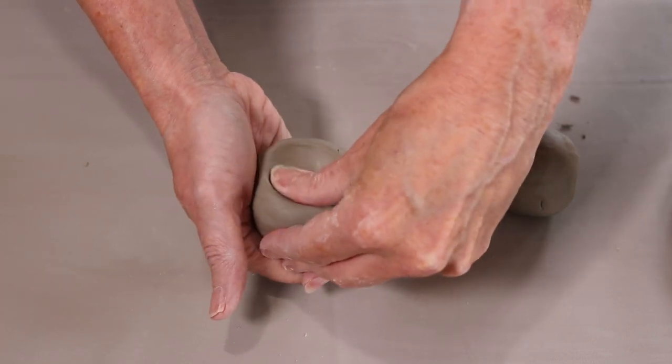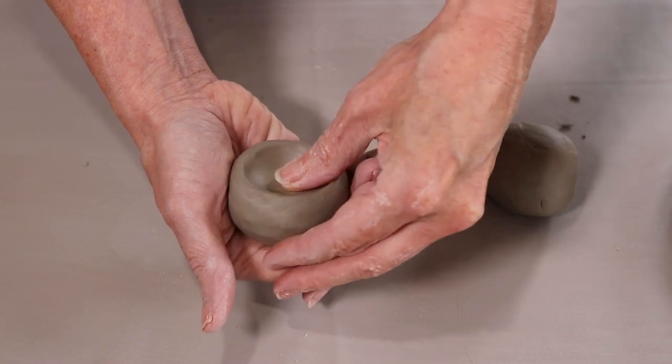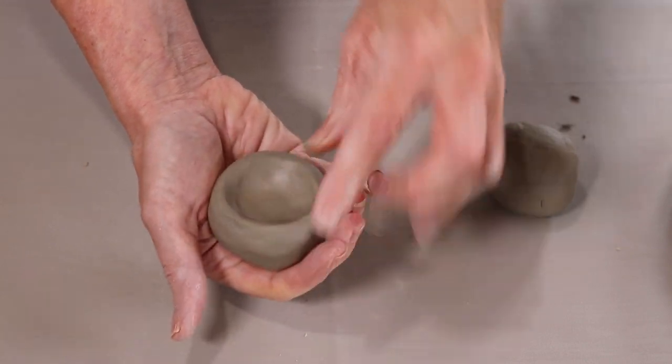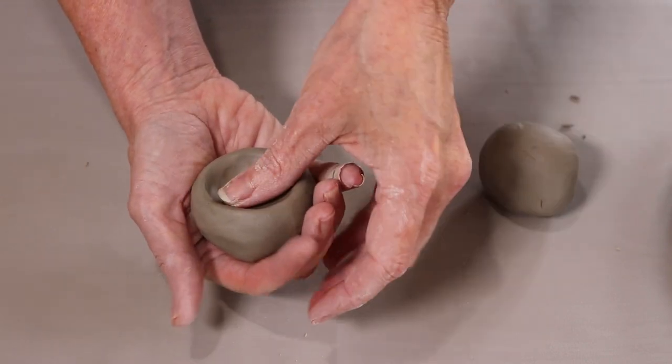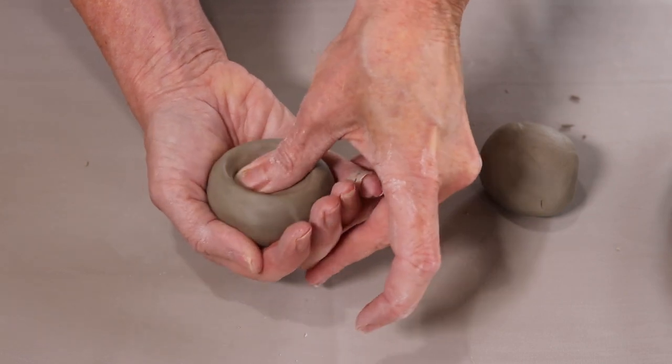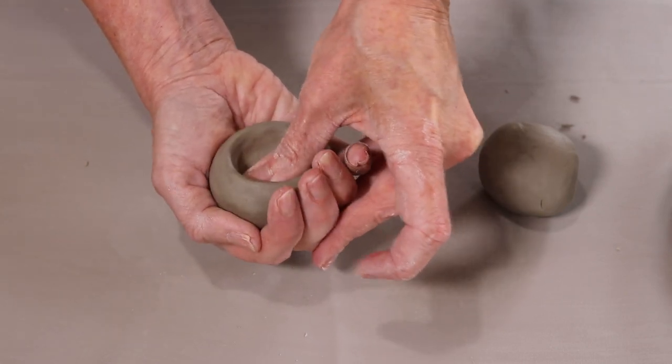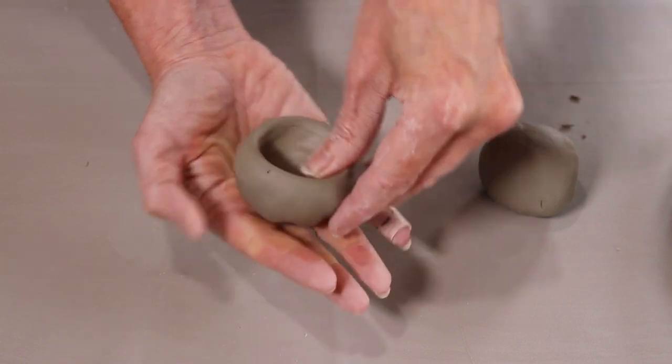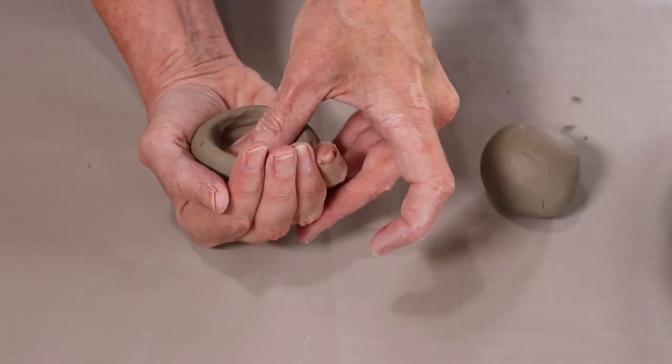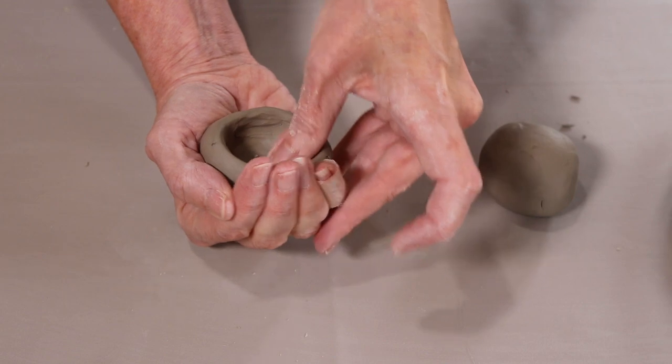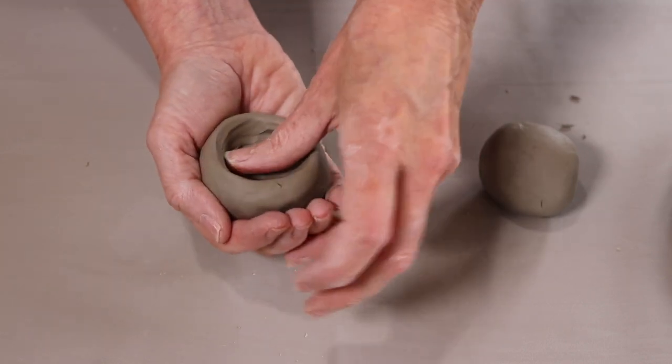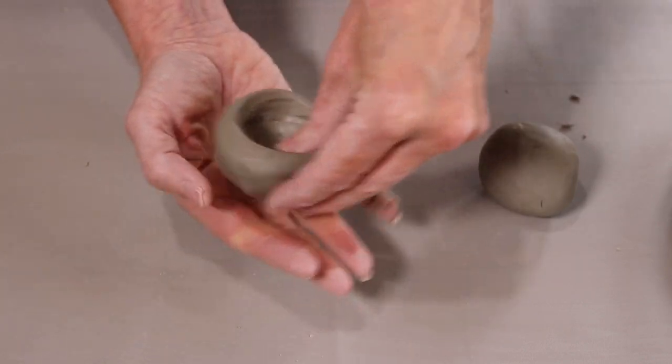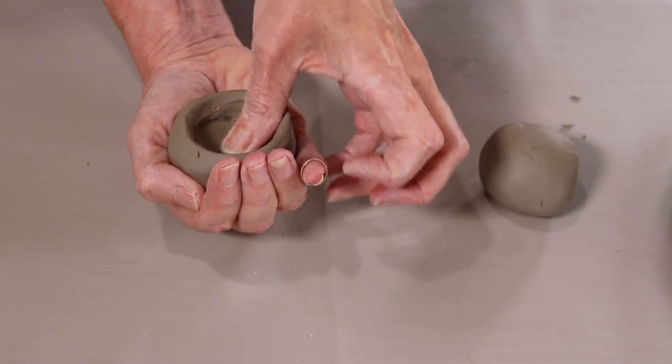So this is how I make all my pinch pots. You want to be very gentle when you're doing this. You don't want to go too thin around here. So this is why it's really important to just press down as much as you can. Keep pressing. Keep smoothing the clay to the side.